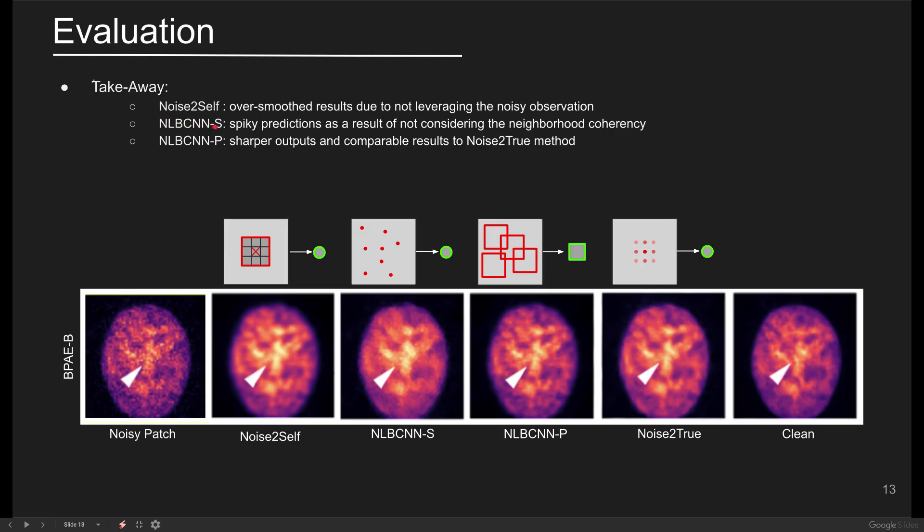The first variant is NLBCNNS, where the patch size is set to 1. This variant helps us to investigate patch size versus pixel-wise denoising.